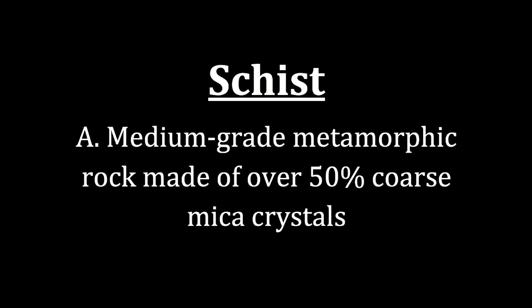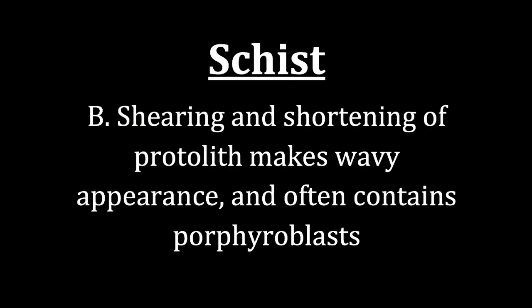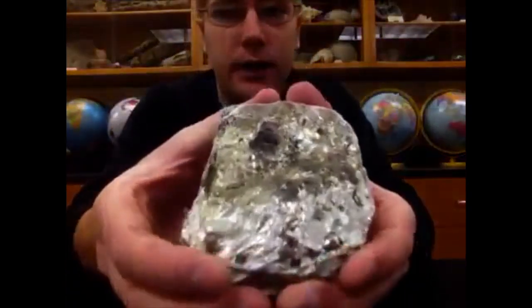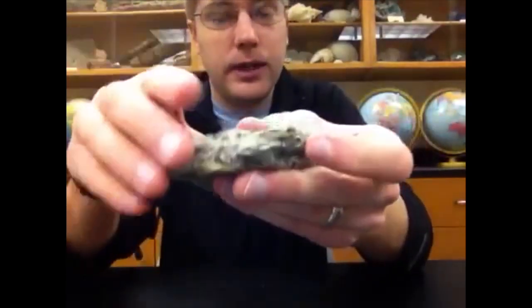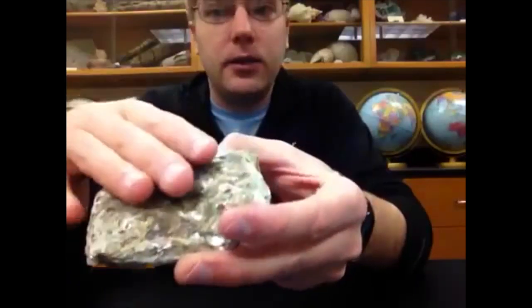The next foliated metamorphic rock is schist. Schist is a medium-grade metamorphic rock in terms of heat and pressure, and it has to be made of over 50% coarse mica crystals or platy-shaped crystals. In schist, there has been shearing and shortening of the protolith, which makes the rock very wavy in appearance, and it often contains porphyroblasts. You can see the shininess of those coarse mica crystals, and sometimes you can flake a little bit off, making glitter rain down.